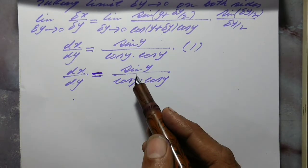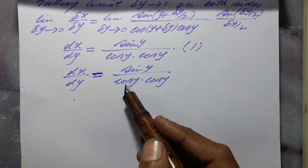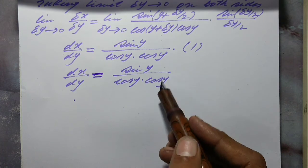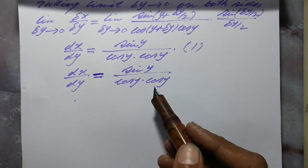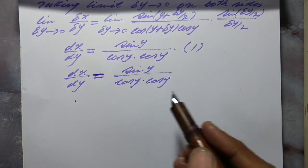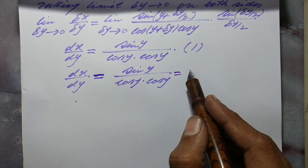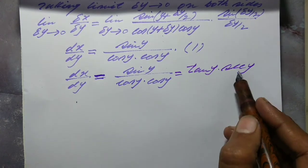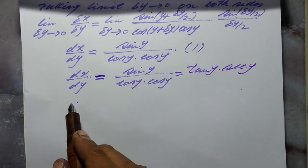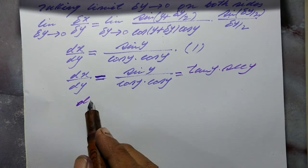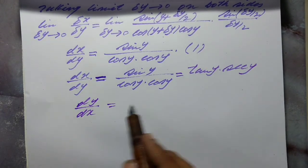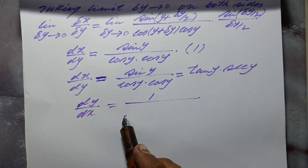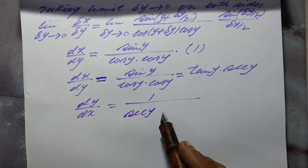As we know, sin upon cos becomes tan, so one cos with the sin becomes tan y, and the other cos becomes sec in the numerator, since cos is the reciprocal of sec. This equals tan y into sec y. Therefore, dy upon dx equals 1 upon (sec y into tan y).